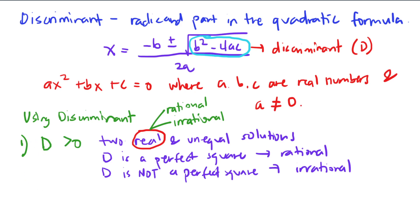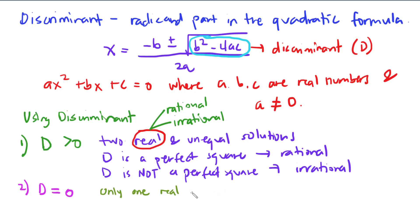For number two: if your discriminant D is equal to zero, you will have only one real solution — a real and equal solution. Again, real means it could be rational or irrational, and it is an equal solution. So if your D equals zero, you only get one solution.